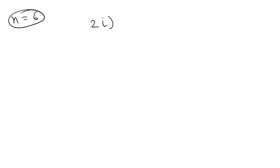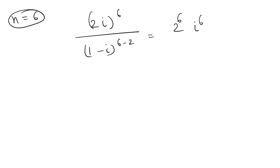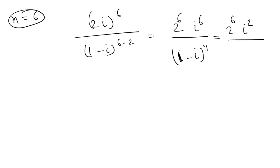For n = 6, we evaluate (2i)^6 / (1 - i)^(6-2). So this is (2i)^6 over (1 - i)^4. Now (2i)^6: since i^6 = i squared = -1, and for (1 - i)^4 we simplify accordingly.